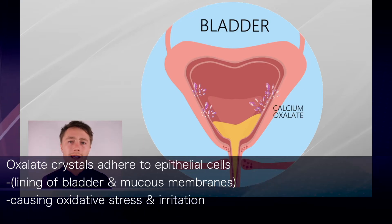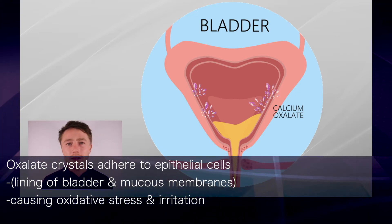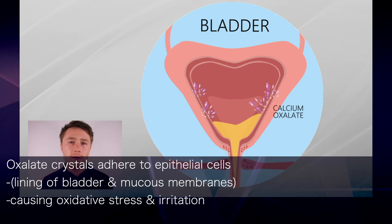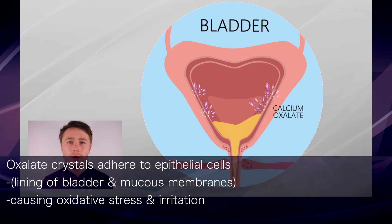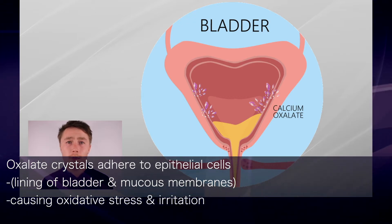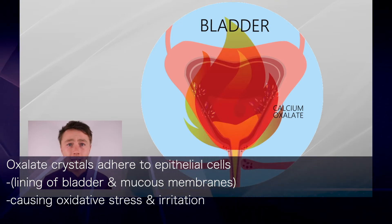Oxalate crystals can get into the bladder. Calcium oxalate crystals have the uncanny ability to adhere to epithelial cells, and epithelial cells are what line the bladder and the mucous membranes. We know that when calcium oxalate adheres to or becomes deposited in a tissue, it causes inflammation, oxidative stress, and irritation.